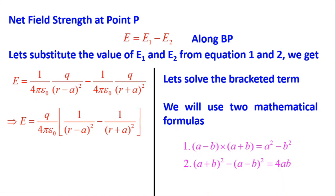To simplify, we use algebraic formulas: (a − b)(a + b) = a² − b², and (a + b)² − (a − b)² = 4ab. Please revise these simple formulas from class 8 or 9 mathematics.